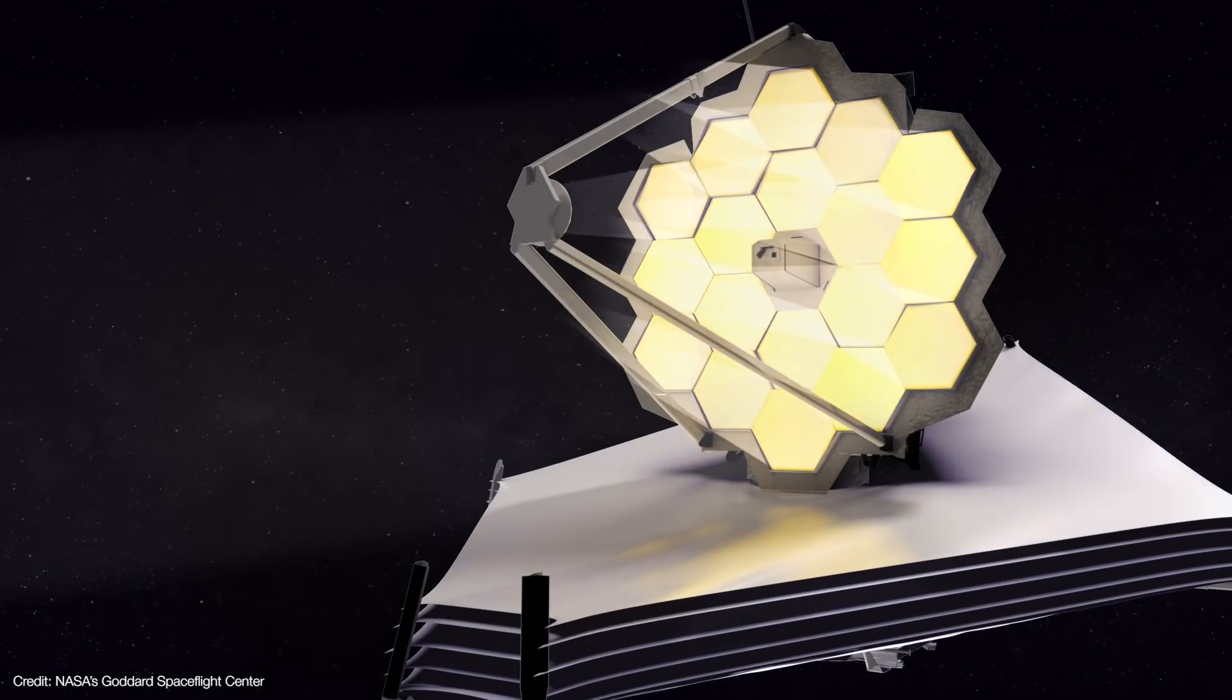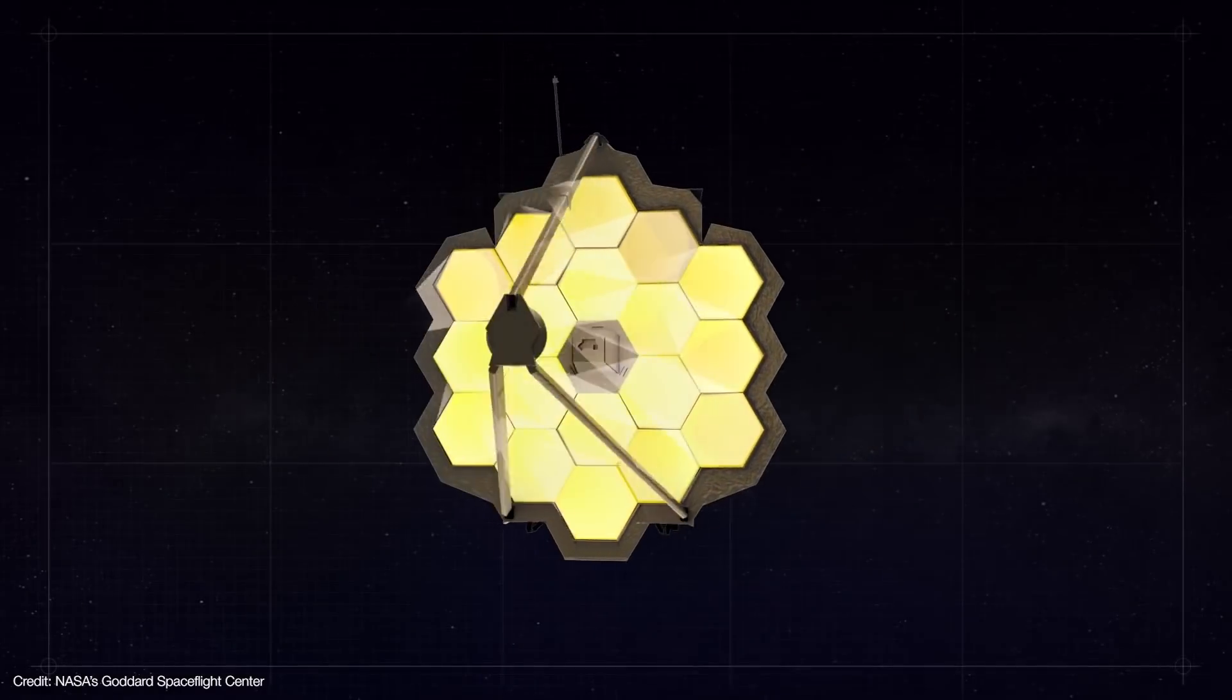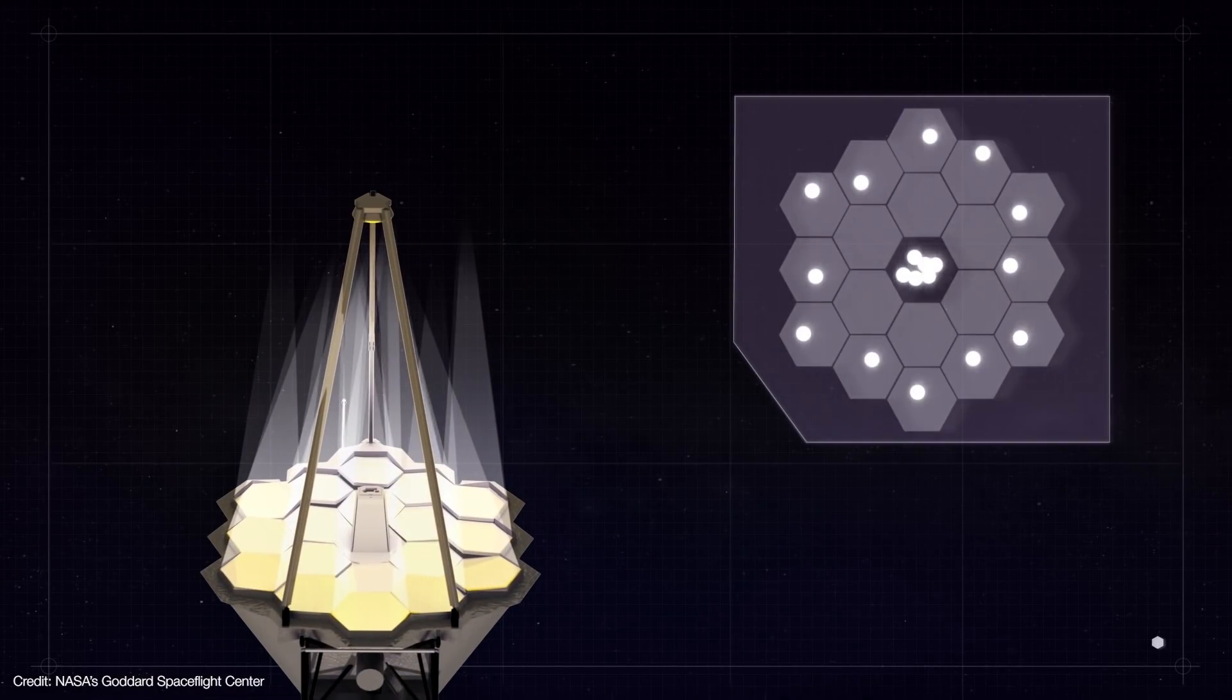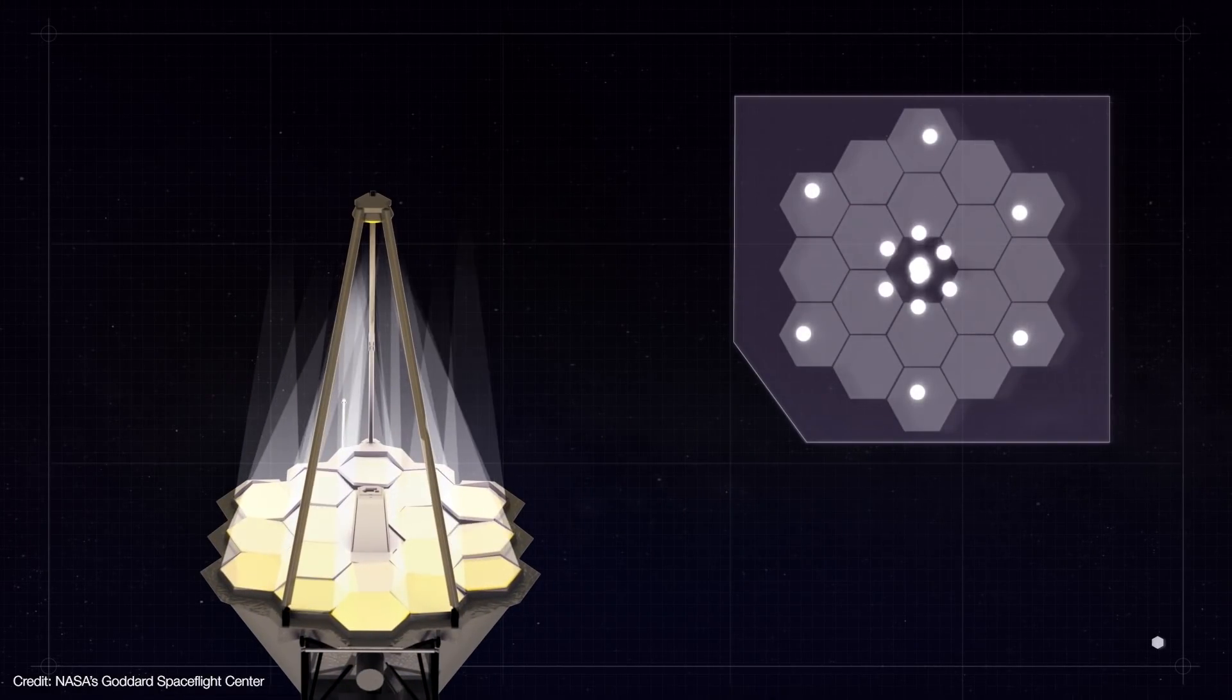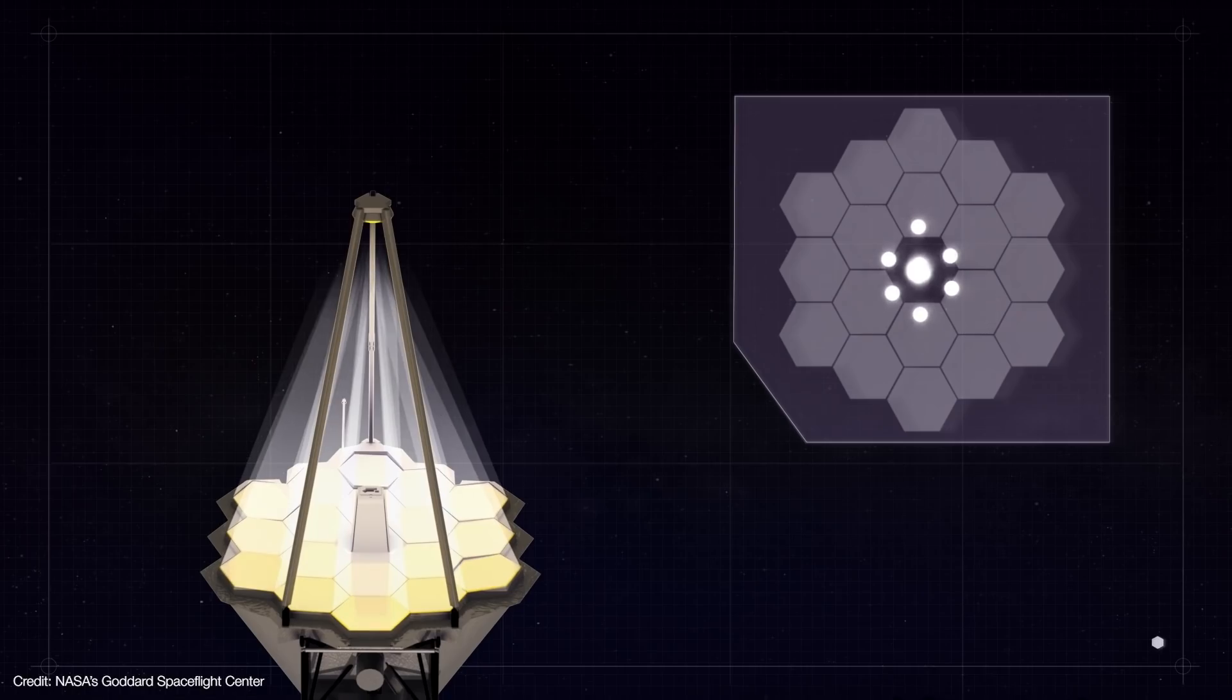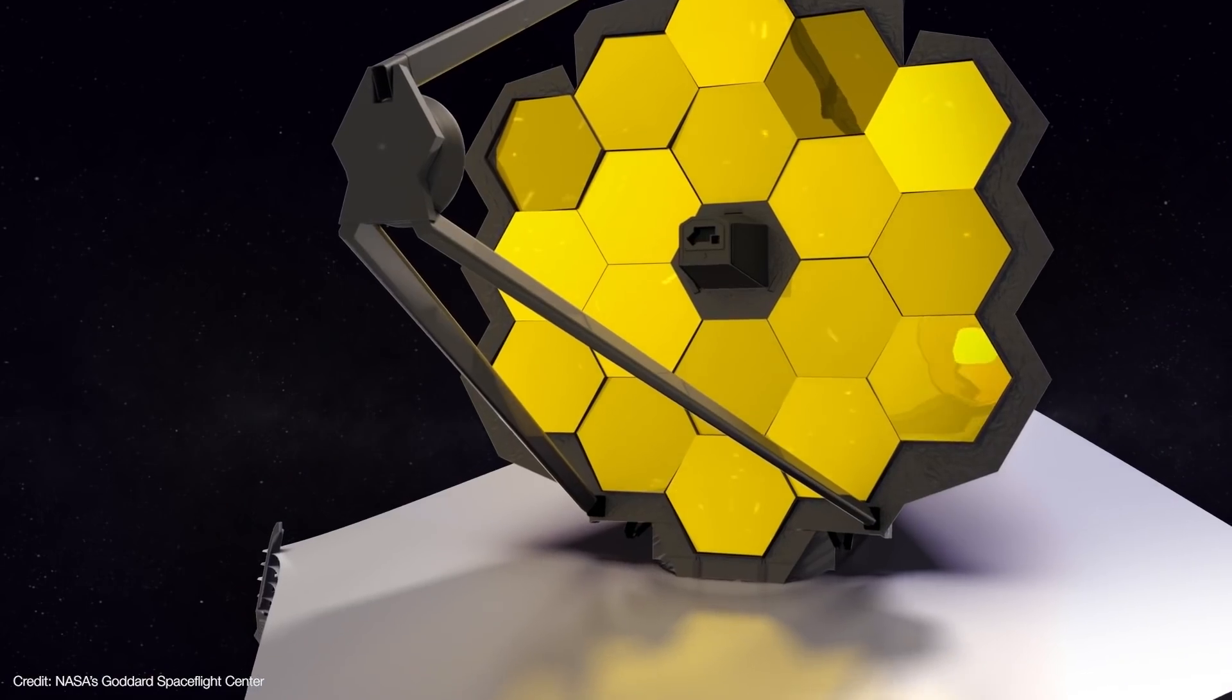Webb begins its mirror alignment by imaging a star with the near-infrared camera. Initially, it sees 18 images. One by one, the mirrors are adjusted until the images are stacked in the center. That's a good first step, but the image is still going to be blurry. To really get the segments to combine into a single, monolithic mirror, actuators continue to adjust each segment, this time in smaller amounts.